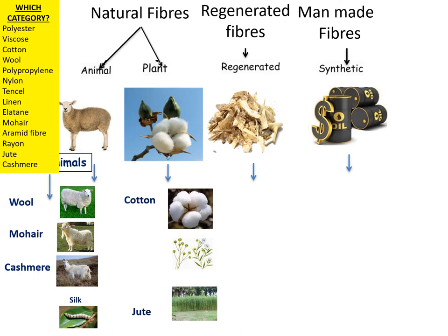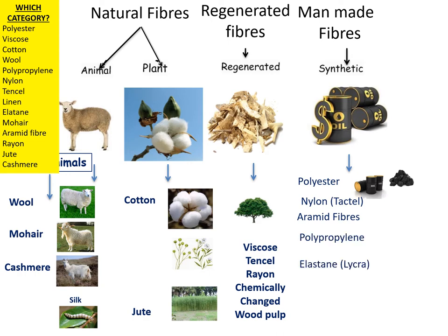In the regenerated fabrics section, these are fabrics made from chemically changed wood pulp. These include fabrics such as viscose, Tencel and rayon — they have some natural material and some synthetic chemicals in as well. In the synthetic or man-made category, we have polyester, nylon, aramid, polypropylene and elastane. These fabrics all contain oil and coal.